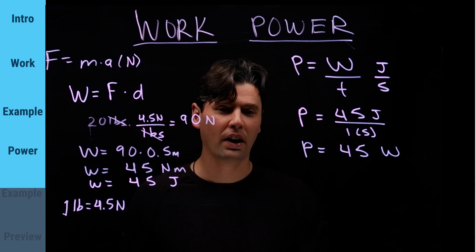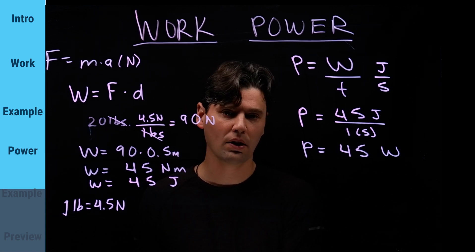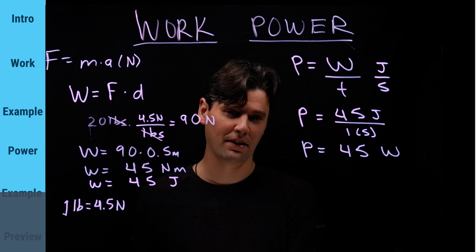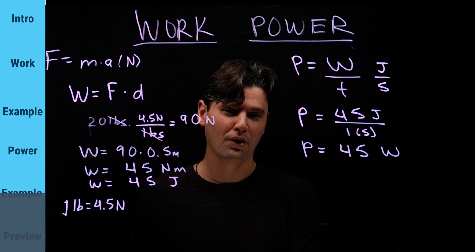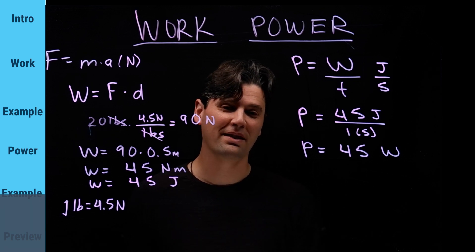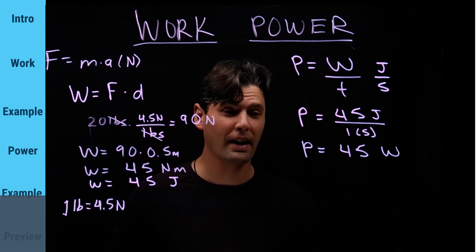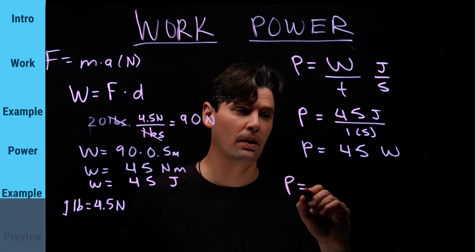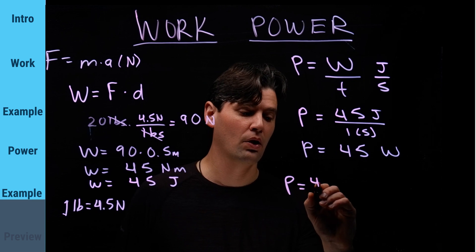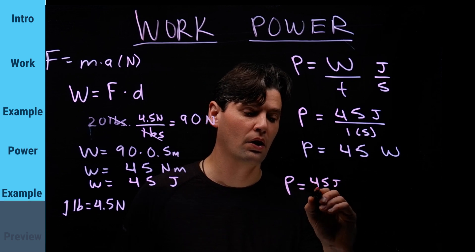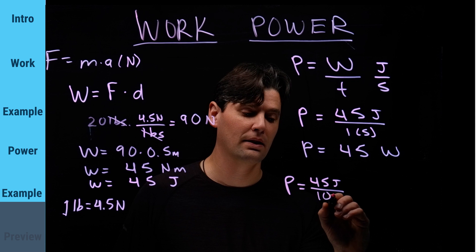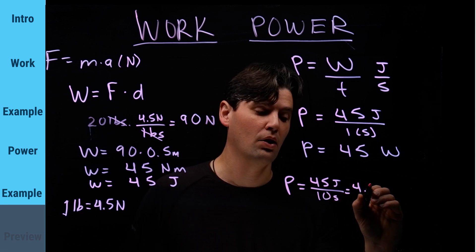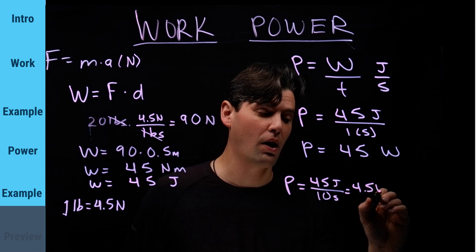If I was doing that really slowly, imagine it took me 10 seconds just to lift up that weight, then what would the power be? Power equals 45 joules divided by 10 seconds. So that power would actually only be 4.5 watts.